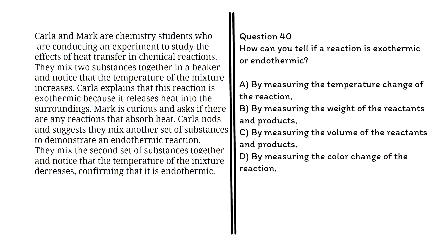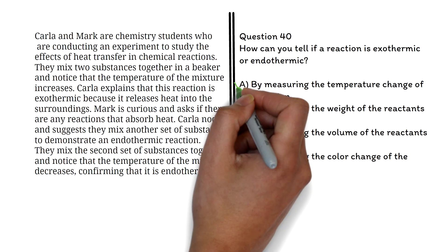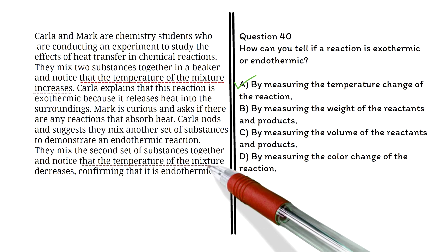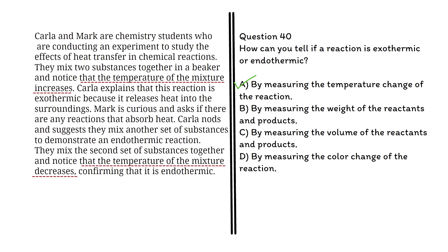a. By measuring the temperature change of the reaction. b. By measuring the weight of the reactants and products. c. By measuring the volume of the reactants and products. d. By measuring the color change of the reaction. The correct answer is a: by measuring the temperature change of the reaction. Carla and Mark were able to determine whether a reaction was exothermic or endothermic by observing the temperature change of the mixture.